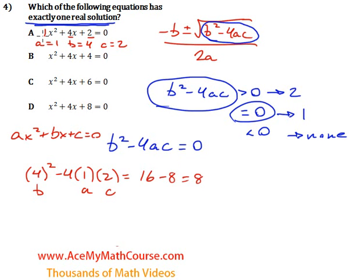So the discriminant for this first equation is not zero. That cannot be the answer.